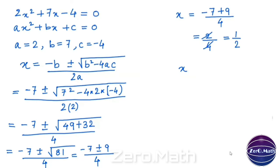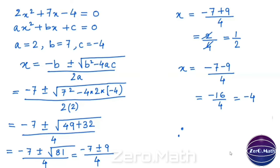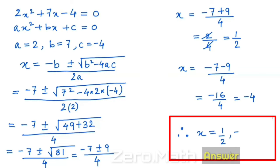Now let us check the value with a negative sign: negative 7 minus 9, divided by 4. Negative 7 minus 9 becomes negative 16, divided by 4, so the answer is negative 4. Therefore, we have two values: x equals 1 over 2, and the other value is x equals negative 4.